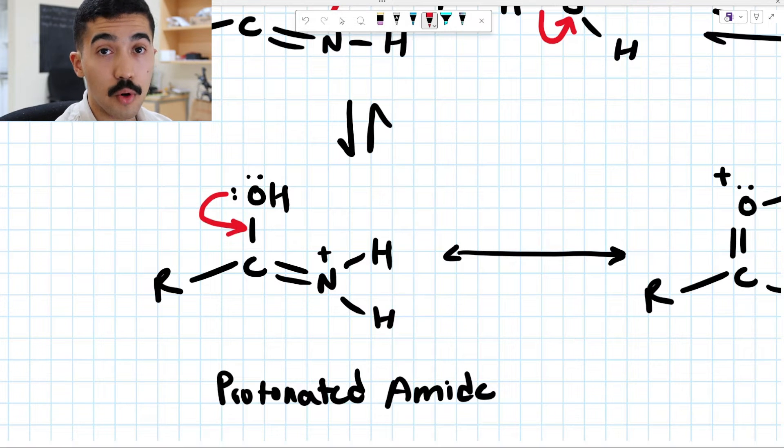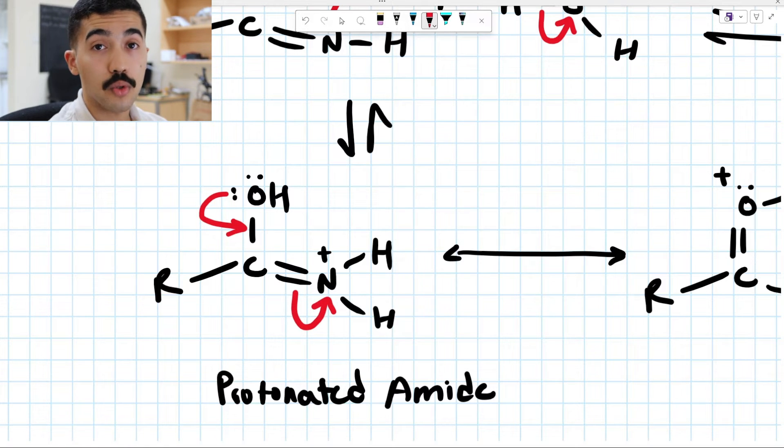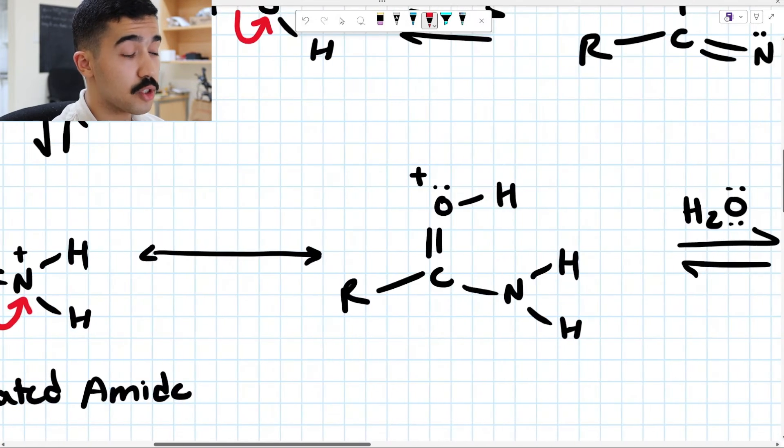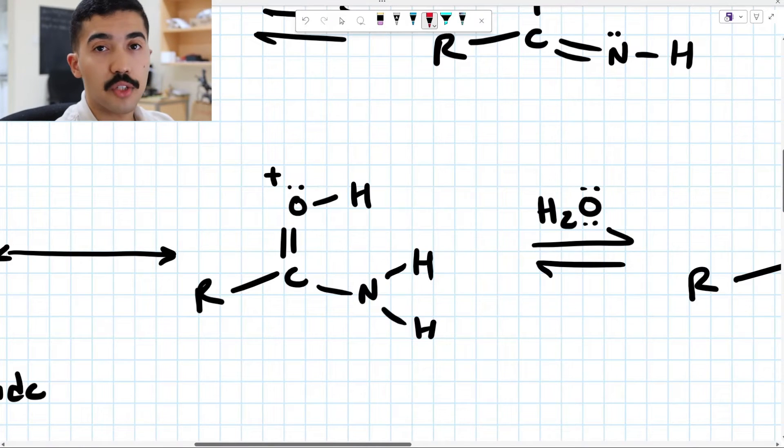When it does that, carbon can have a maximum of four bonds. If you have five, you're going to hellfire. What we're going to do is we're going to break the C double bond N and the lone pairs are going to collapse towards nitrogen. In doing so, we still have our protonated amide. And now we have the resonance structure of it.